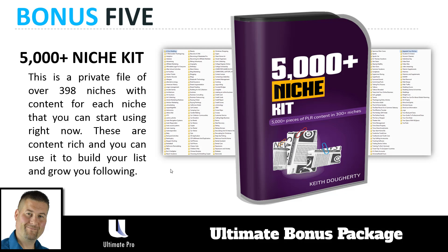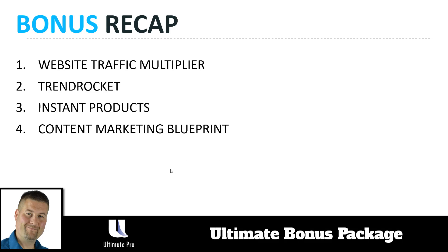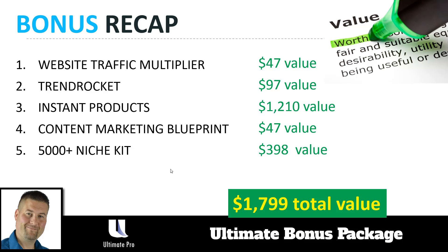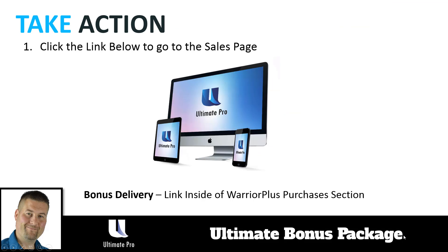Quick bonus recap: you get the Website Traffic Multiplier, the Trend Rocket training, 121 Instant Products you can put your name on, the Content Marketing Blueprint, and the 5,000 Plus Niche Kit. We've assigned conservative values — Instant Products alone at $10 each is a $1,200 value; the niche kit at $1 per niche is $398. Together that's almost an $1,800 bonus package when you buy WP Ultimate Pro today.